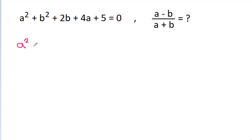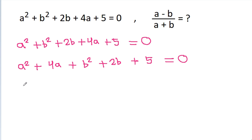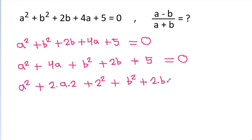So we have a squared plus b squared plus 2b plus 4a plus 5 is equal to 0. We rearrange this as a squared plus 4a plus b squared plus 2b plus 5 equals 0. Note that a squared plus 4a is 2 times a times 2, and if we add 2 squared here; plus b squared plus 2b is 2 times b times 1, and if we add 1 squared here.